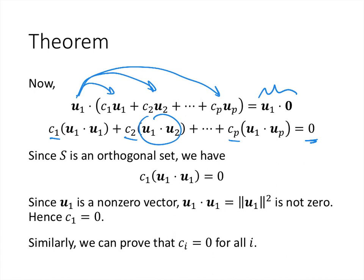Here's where the orthogonality works out. Because u1 dot u2 is 0, u1 dot u3 is 0, and similarly u1 dot up is 0. The only thing that sticks around is c1 times (u1 dot u1). Because we assumed these vectors are non-zero, u1 dot u1 equals the norm of u1 squared, which is nonzero. The product c1 times (u1 dot u1) equals 0, so since u1 dot u1 is not 0, c1 must be 0. We would do the exact same thing dotting u2 on both sides to prove c2 equals 0, and so on for each coefficient.